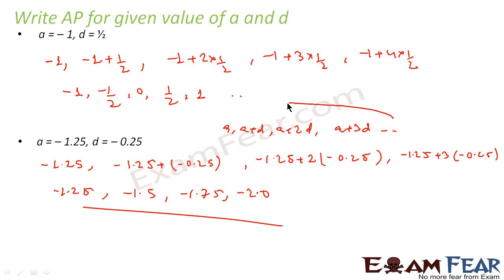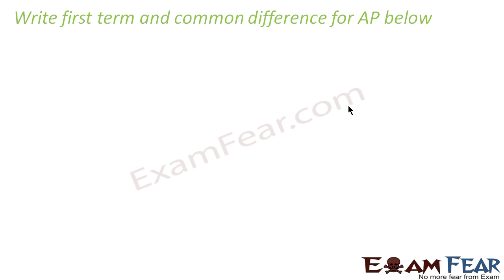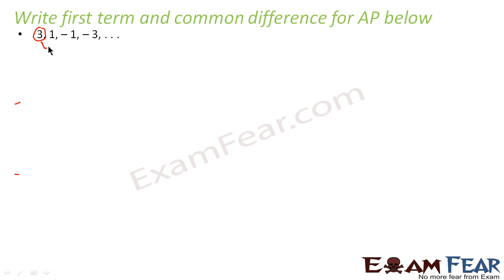Now the question is we have to find the first term and common difference for the AP. If you observe this clearly, the first term is 3. The common difference we have to find: 1 - 3 = -2, -1 - 1 = -2, -3 - (-1) = -2. So here a = 3 and d = -2.